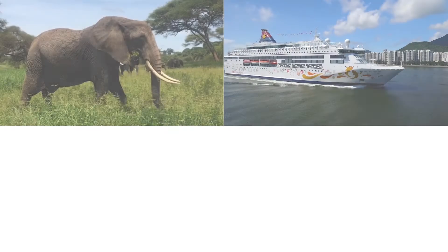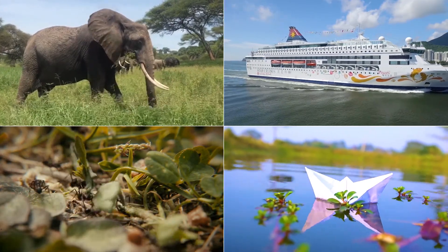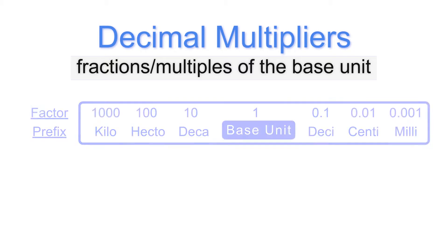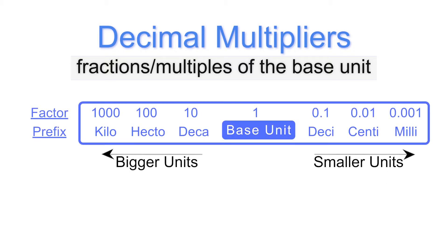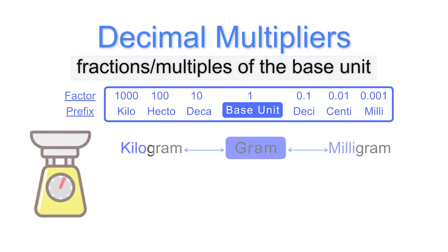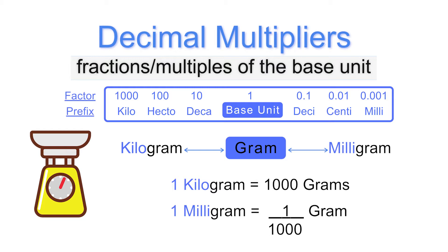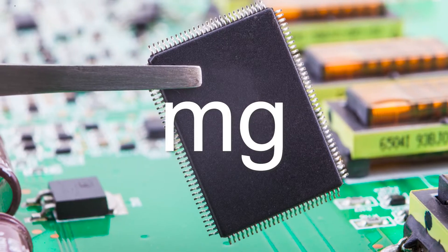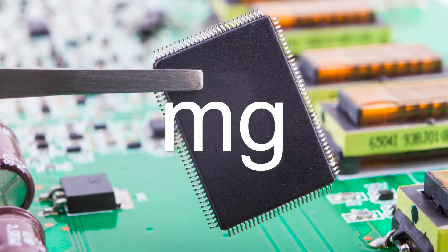For extremely large and extremely small numerical values, decimal multipliers are very helpful in describing such quantities. Decimal multipliers are simply fractions or multiples of the base unit. The mass of an object can be expressed in grams, kilograms, or milligrams, where a kilogram is equivalent to 1000 grams, while 1 milligram is equivalent to 1 over 1000 gram. For example, the mass of a sack of rice is usually expressed in kilograms, while the mass of a microchip in a computer is more suitable to be expressed in milligrams.